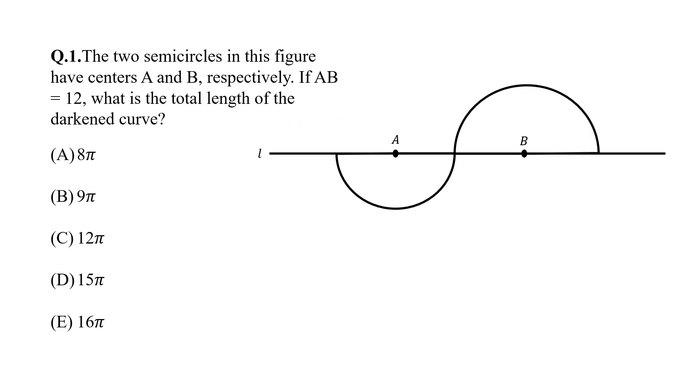The first question is this one. The two semicircles in this figure have center A and B. If AB is equal to 12, what is the total length of this curve?